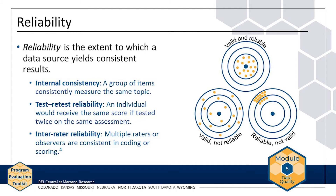Now let's look at reliability. Reliability is the extent to which a data source yields consistent results. You can examine reliability in different ways. For assessments, look at whether the items consistently measure the same topic — this is called internal consistency. For example, if one section of a math exam is focused on ratios and proportional reasoning, you expect a student's performance on questions in that section to be similar. Also look at whether the results would be similar if the same student took the assessment twice, across a period of time when you might expect scores to be stable. For example, if you use a diagnostic screening test to identify students with math learning difficulties, you expect that the test results would be similar if you tested the same student more than once.